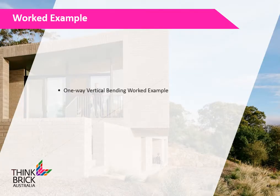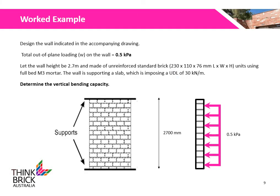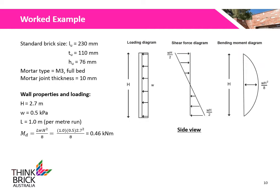We will now go through a worked example on how to determine the vertical bending capacity of an unreinforced brick wall. This example requires us to design a load-bearing wall with a total out-of-plane loading of 0.5 kPa. The wall is 2.7 metres high, made of standard brick units using full bedding of M3 mortar, and is supporting a slab imposing a UDL of 30 kN per metre. Using a total out-of-plane loading of 0.5 kPa, the design bending moment is calculated to be 0.46 kNm for the 2.7 metre high wall. The shear and bending diagrams are shown on the right. We will not consider the dead load from the slab at the moment.